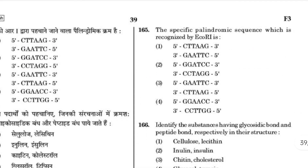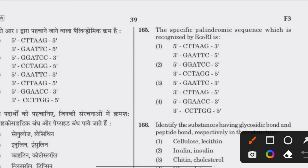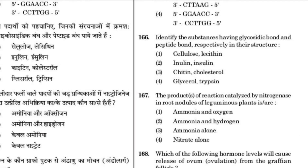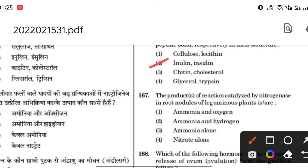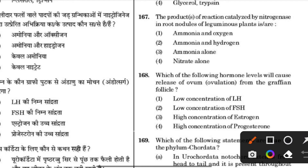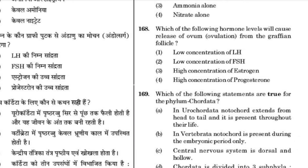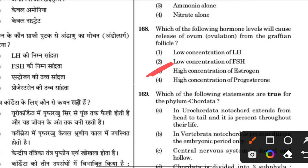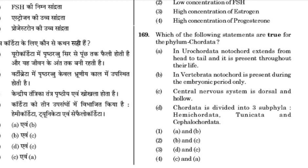The specific palindromic sequence recognized by EcoRI — answer is 3. Identify the substances having glycosidic bond and peptide bond respectively in their structure: inulin and insulin. The product of the reaction catalyzed by nitrogenase in the root nodules of leguminous plants is ammonia and hydrogen — answer for 167.